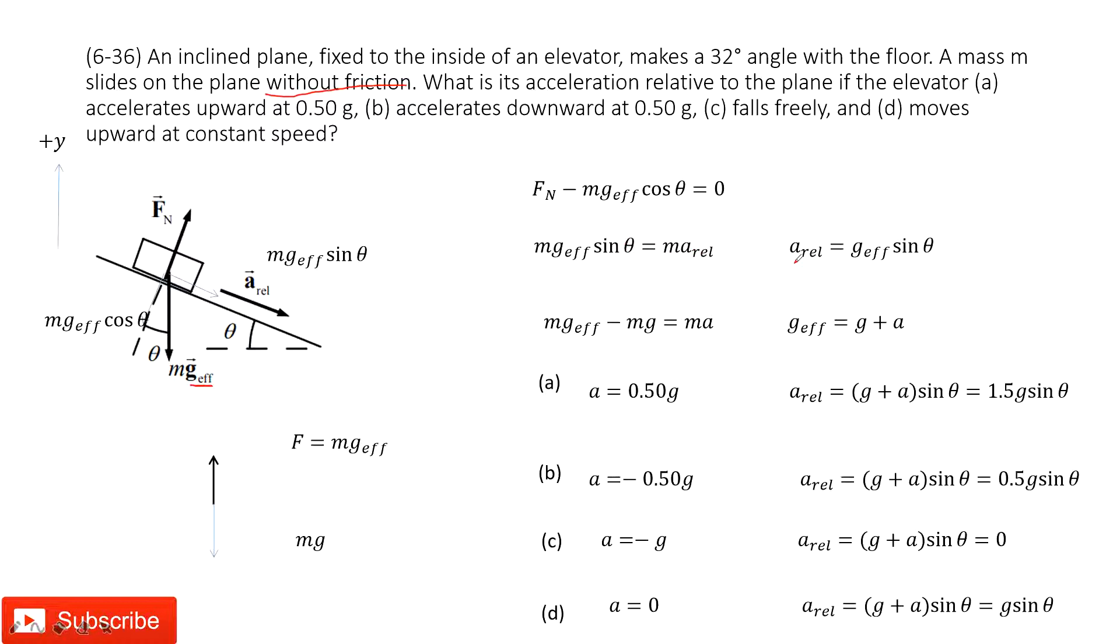So, from these two equations, we can find the acceleration relative depends on the g effective times the constant sine theta. Sine theta is constant. So, we look at the g effective. How can we decide that?